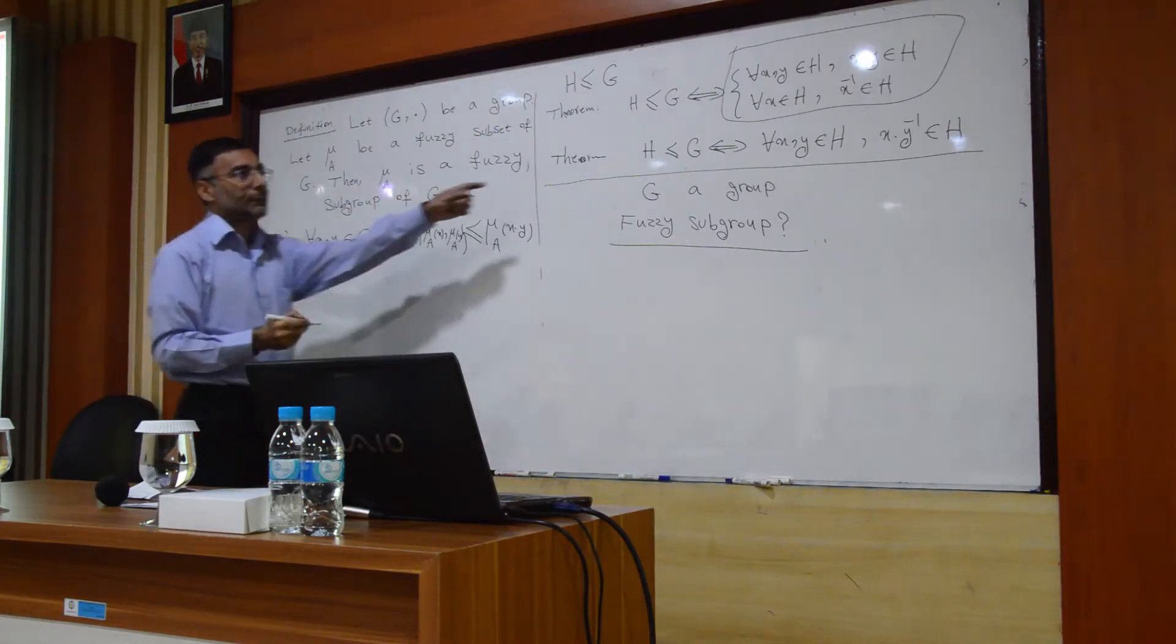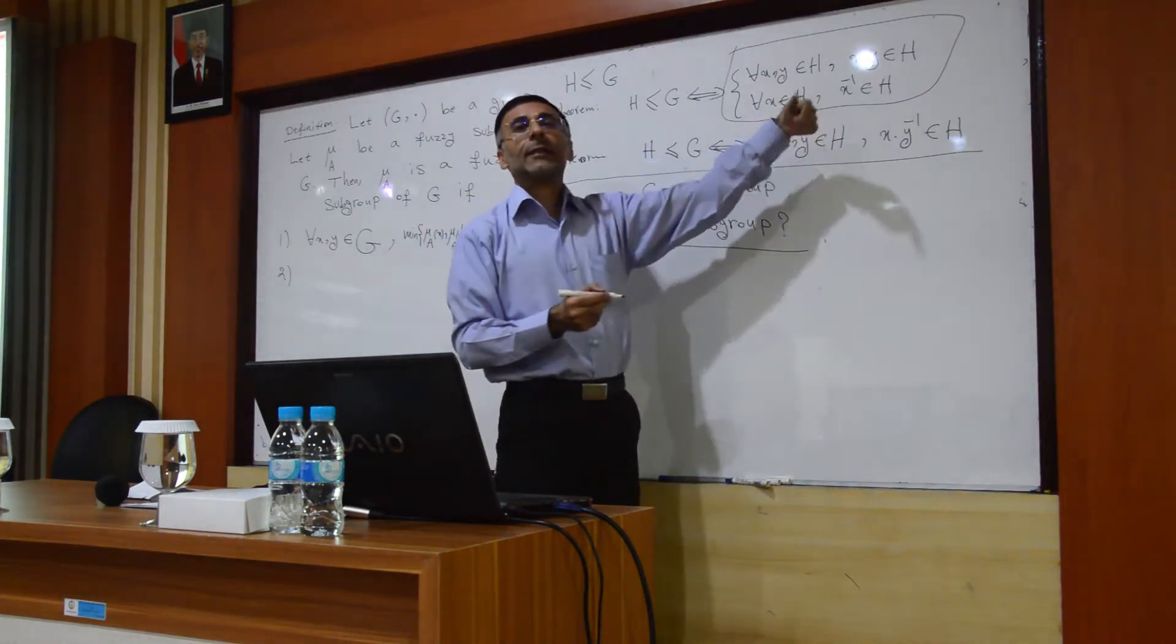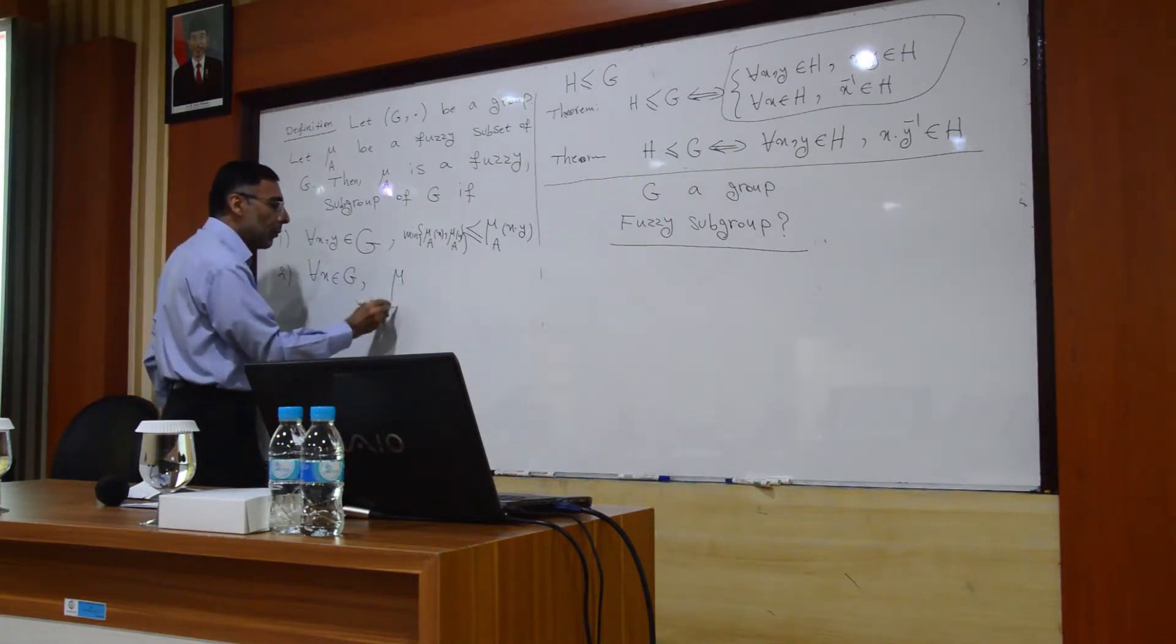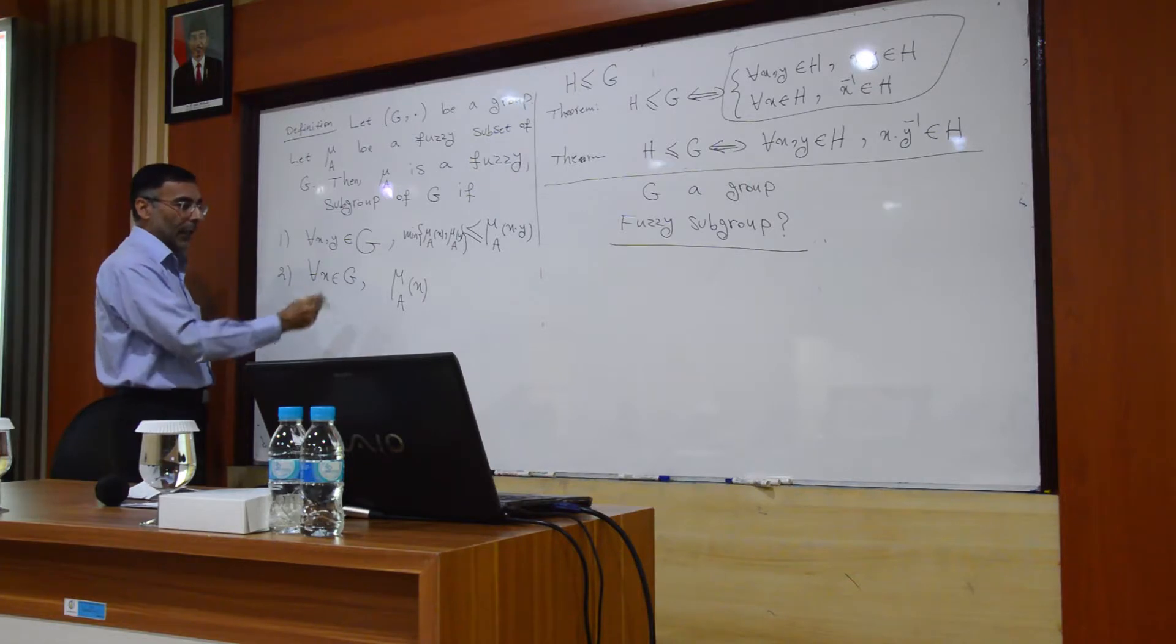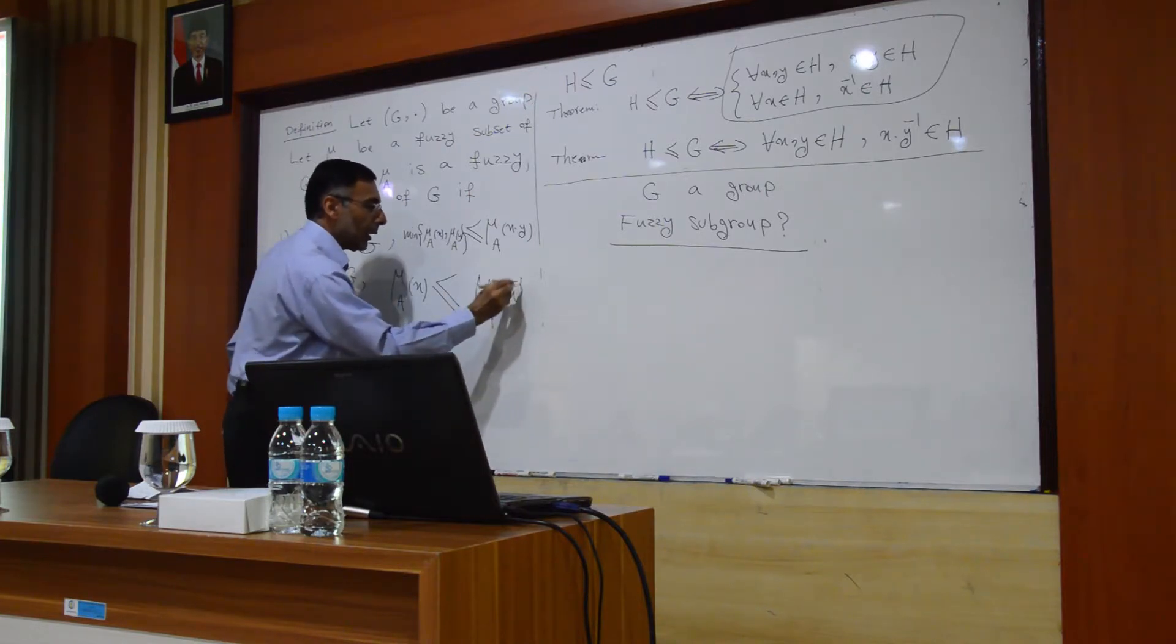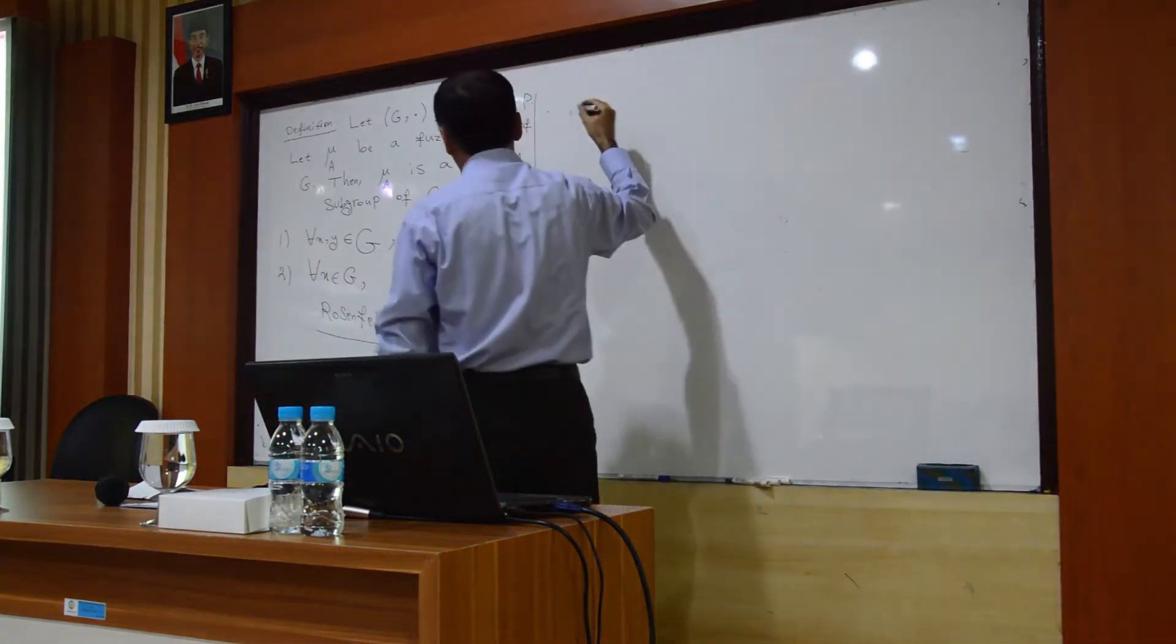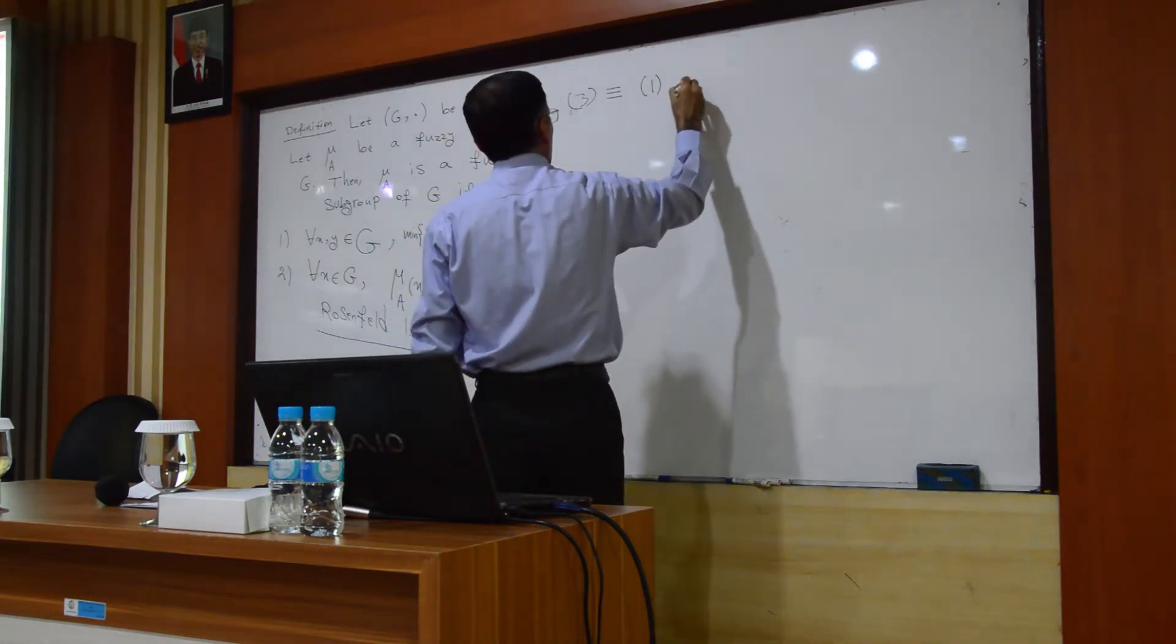And, for the second, when x belong to H, we conclude that x inverse belong to H. Here, we say for every x in G, if we know the membership function of x, degree of membership function of mu in x, then the membership function in x inverse greater than or equal to mu x. This recognition for the first time introduced by Rosenfeld. We can say 3 is equivalent to 1 and 2.